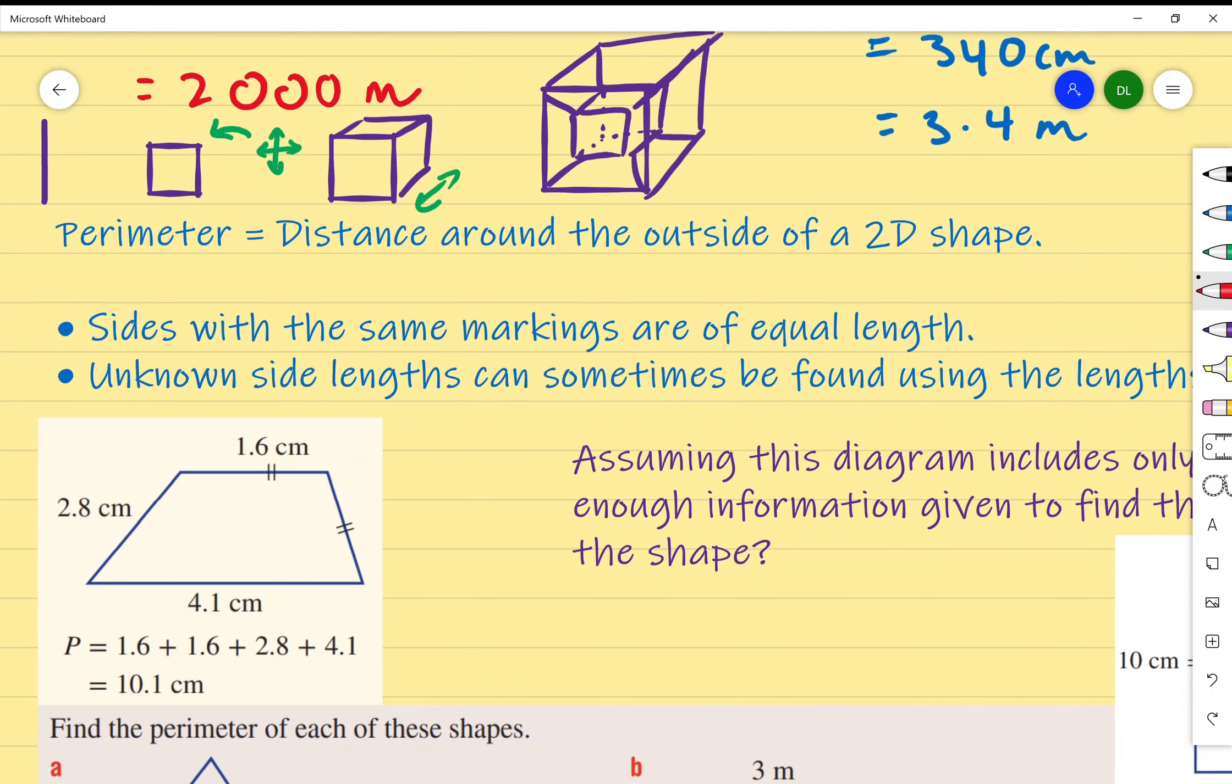Sides with the same markings are of equal length. If you've been given a shape and those two markings are the same, that means the length is the same. The textbook won't say it, but you know the lengths are the same. If they are different markings, like this one has two and this one has three, then they're no longer the same.